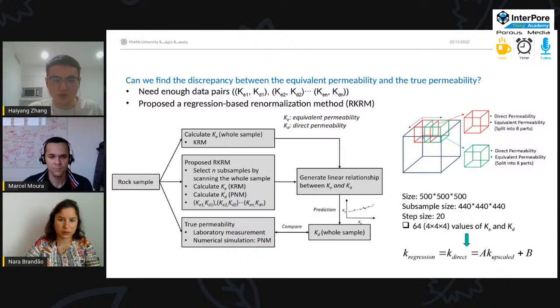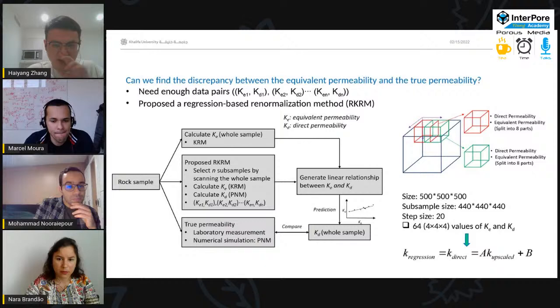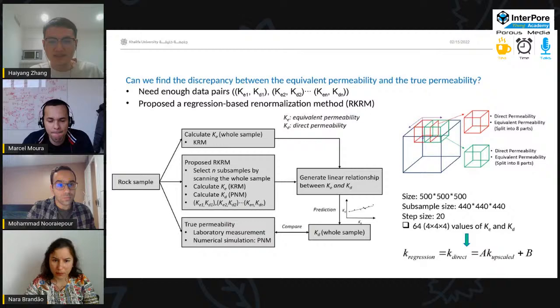For example, if the rock sample size is 500, and the subsample size is 440, and the step size is 20. So, we can have 64 values of KE and KD.